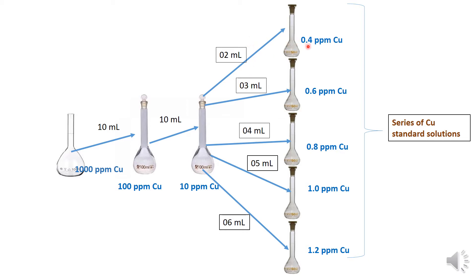So to prepare 0.4 ppm copper solution, take 2 mL from the 10 ppm flask. To prepare 0.6 ppm, take 3 mL. For 0.8 ppm take 4 mL, for 1.0 ppm take 5 mL, and for 1.2 ppm copper take 6 mL from the 10 ppm flask, then make the volume up to the 50 mL mark in each case.